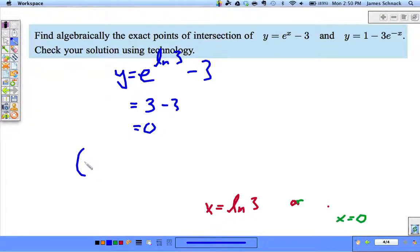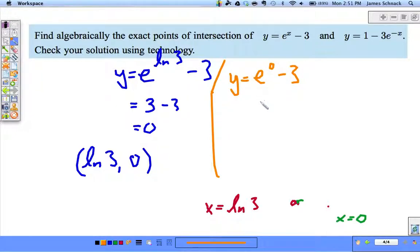Second point of intersection: y = e^0 - 3 = 1 - 3 = -2. So the other intersection point is (0, -2). Two points of intersection. We used logarithms to get exact solutions for x. Personally, this is beautiful, and I hope you love it as much as I do.